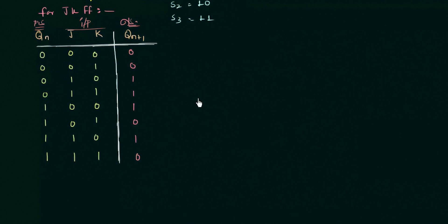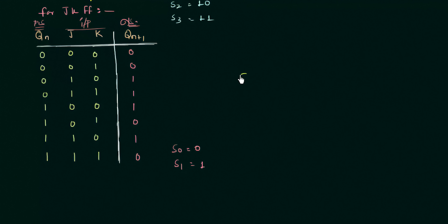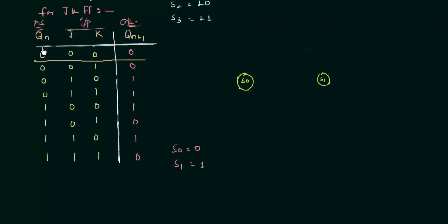There are two possible states because there is only a single flip-flop. Therefore two possible states: S0 is 0 and S1 is 1. Let's check for the first case — the present state is 0, meaning we are on S0.